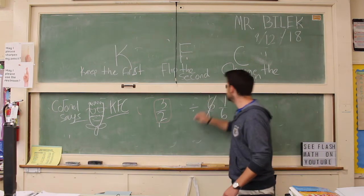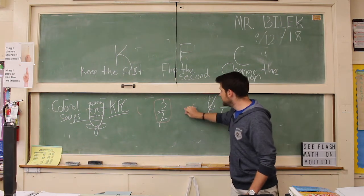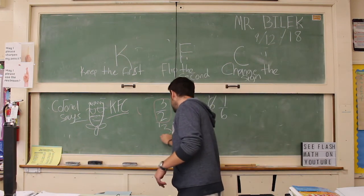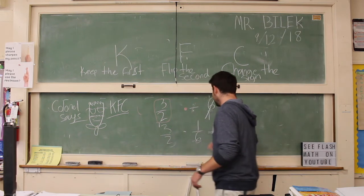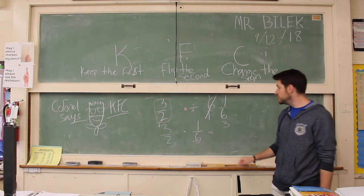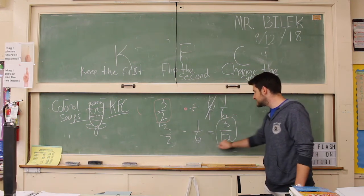Last step right here is change the sign. We want to change it to a multiplication sign. Now we have, I'll rewrite down below, three halves times one over six. And that equals three times one is three, two times six is 12. But stop.